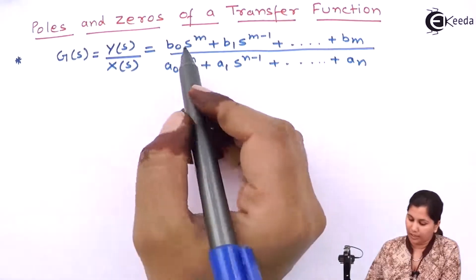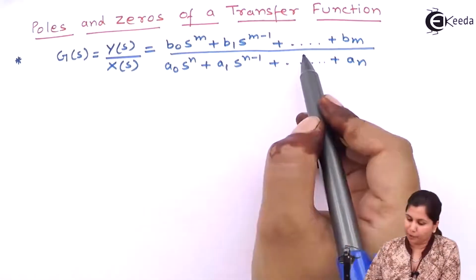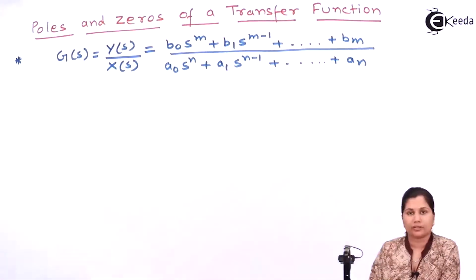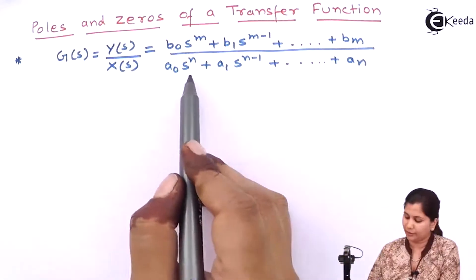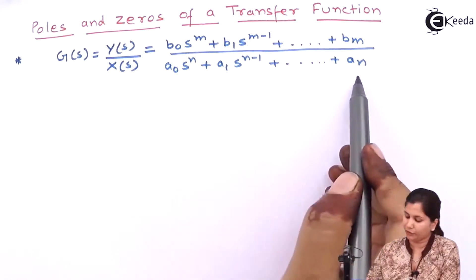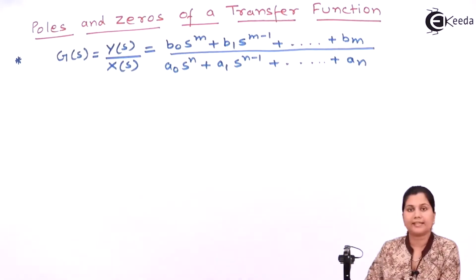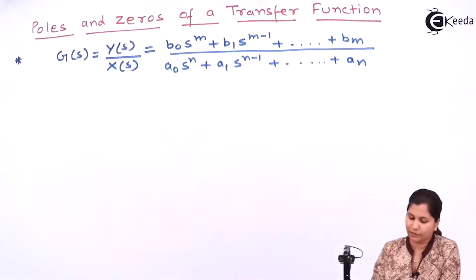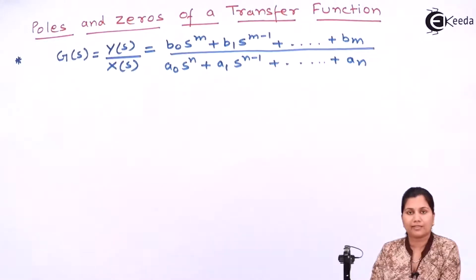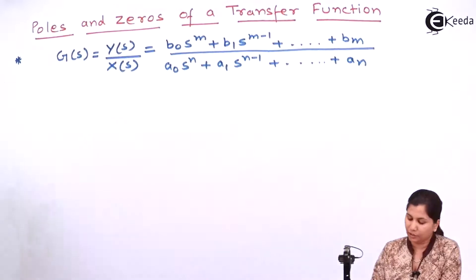The numerator polynomial of the transfer function has M roots and the denominator polynomial has N roots. If we represent this transfer function in the factorized form, that is in the form of its roots, then it will be expressed accordingly.